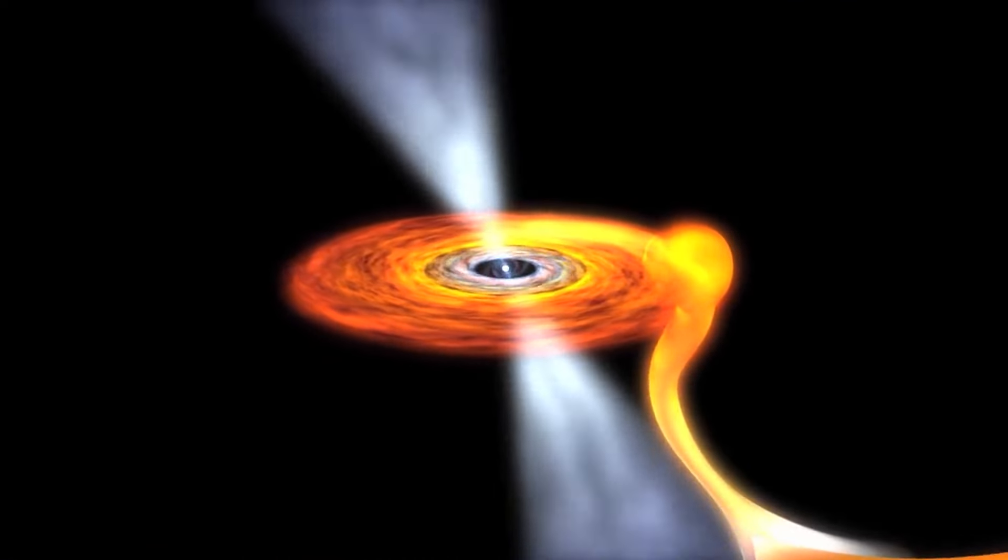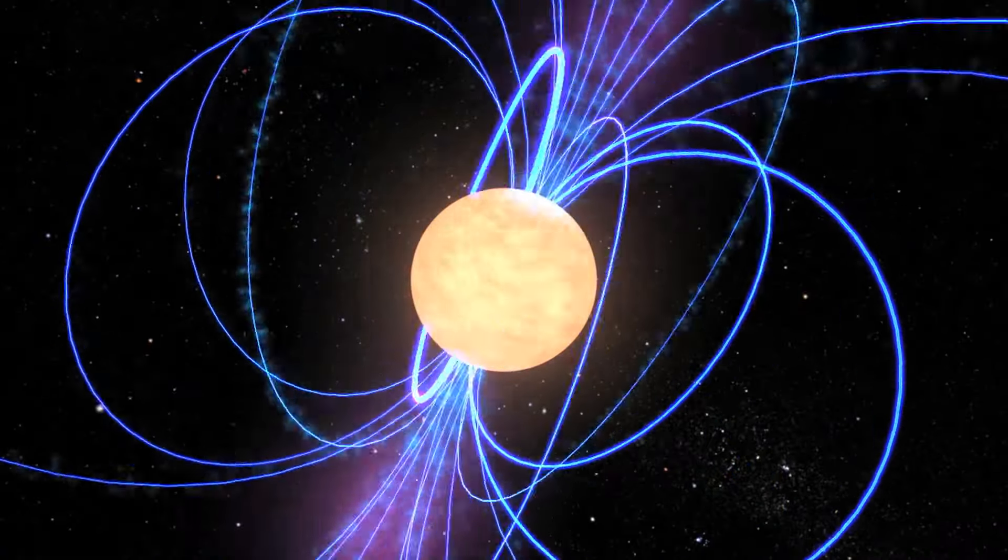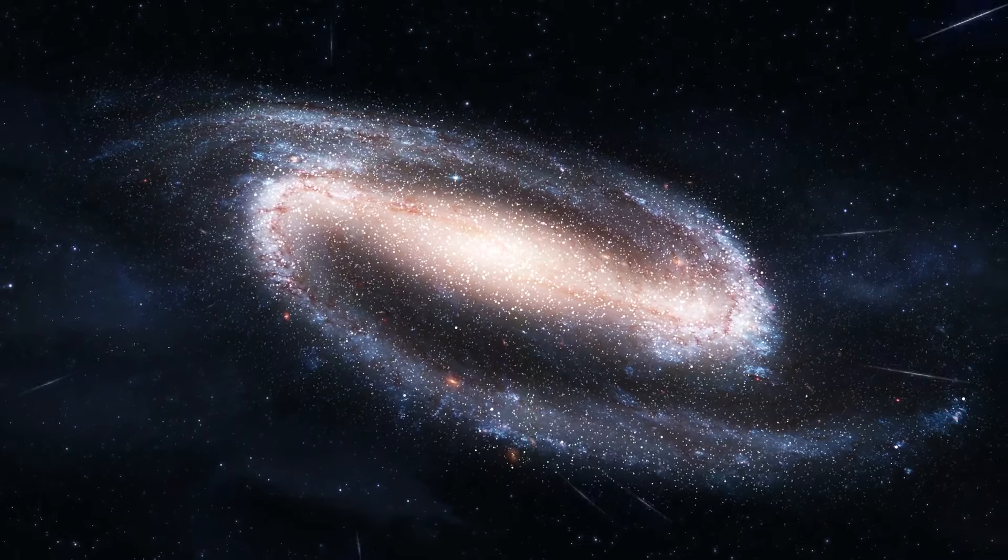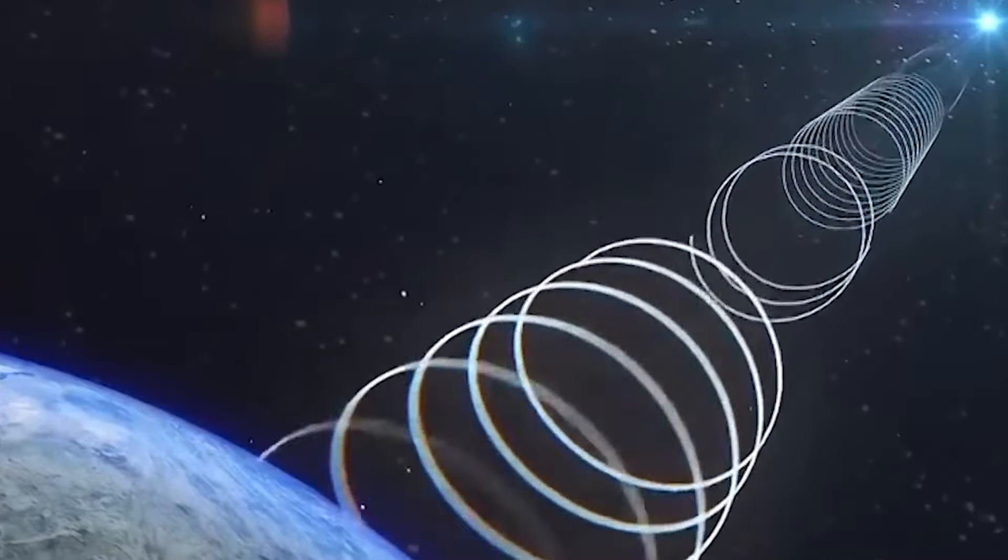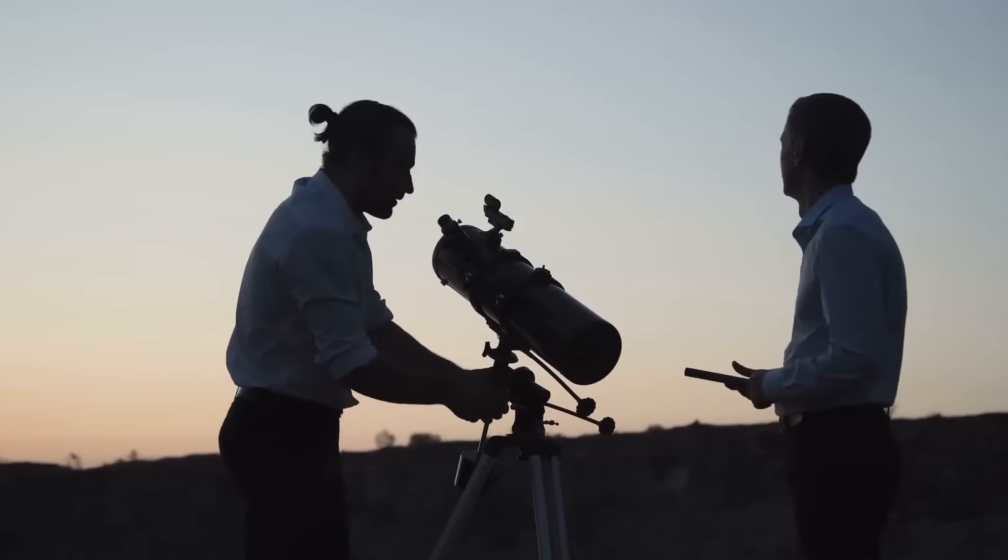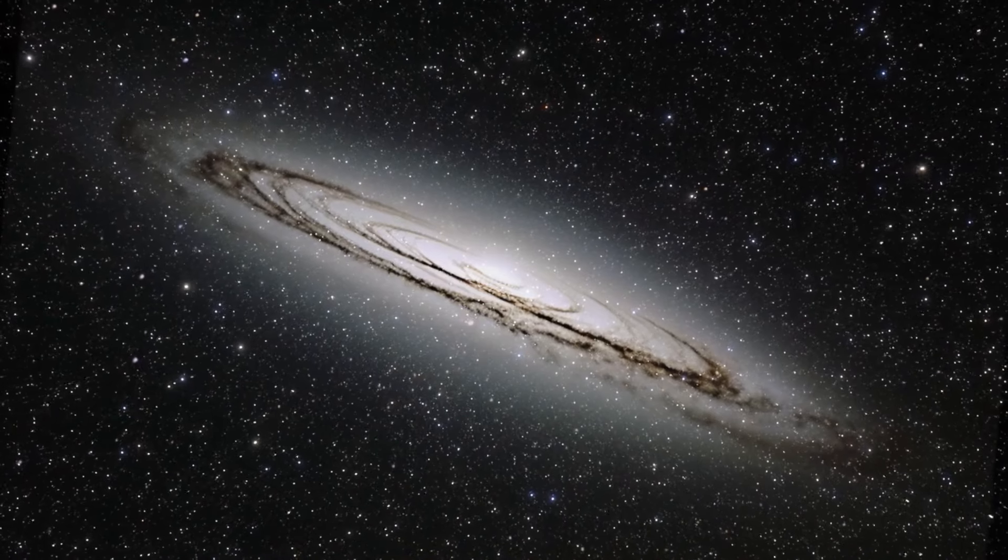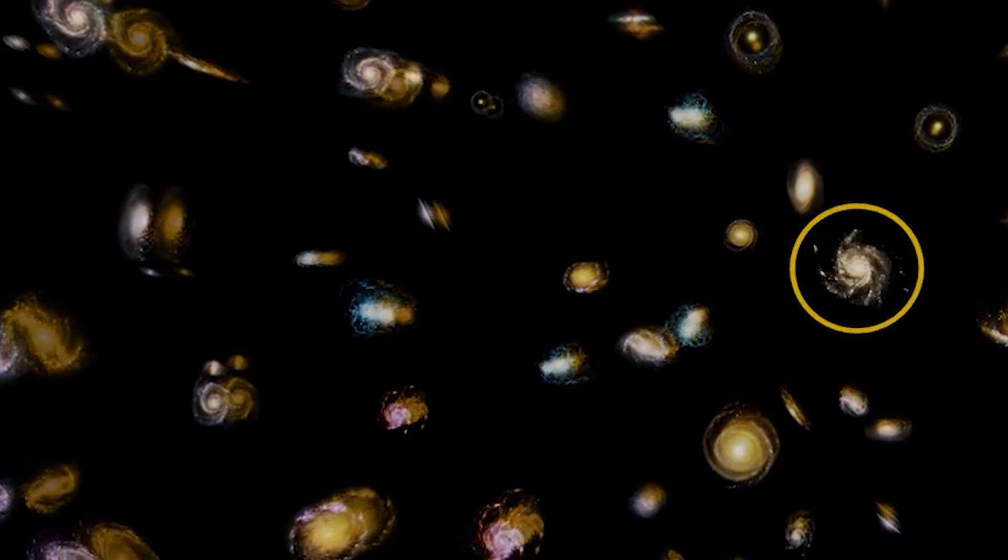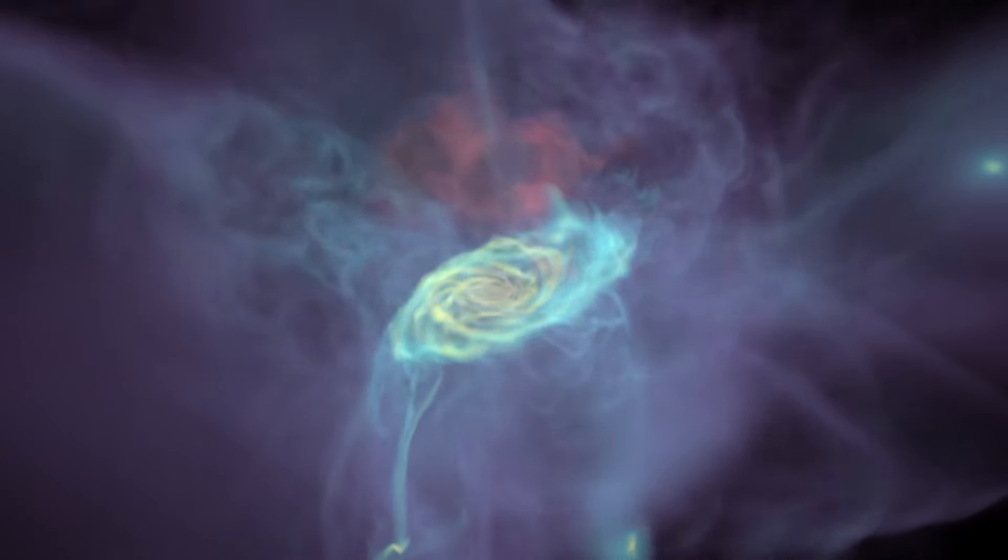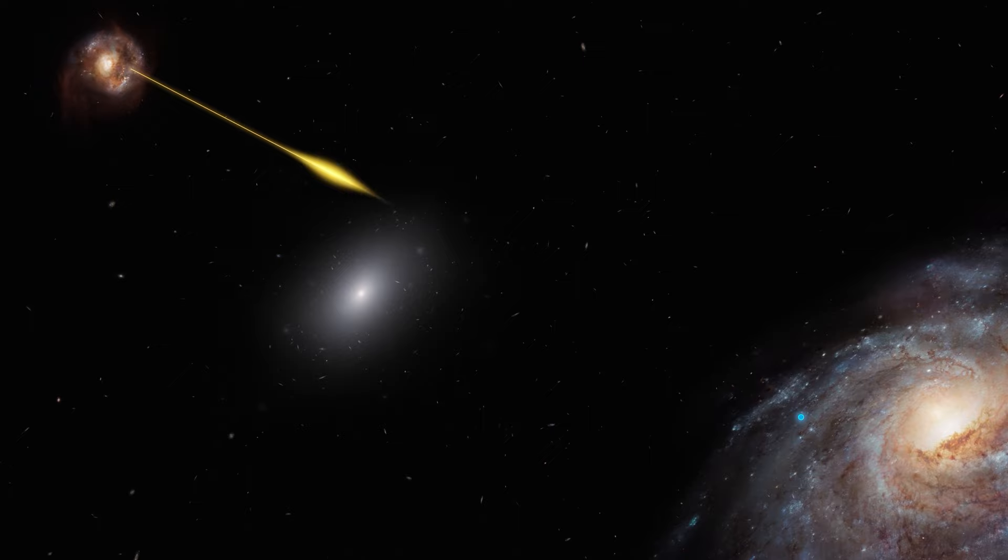But guess what? Fast radio bursts have a special talent. They can sniff out this gas. Even in space that's almost completely empty, they can spot all the electrons that are drifting around. And by measuring how much these electrons mess with the radio waves as they zip through space, we can figure out how much gas there is between galaxies. And that's exactly what these astronomers did with FRB 2022-0610A. They used this FRB as a cosmic ruler to measure how much gas there is between us and its source galaxy. And guess what? They found out that it matches perfectly with what our theories predict. There's no missing matter after all.